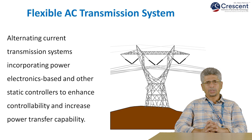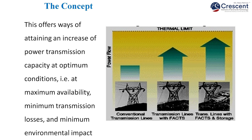Flexible AC Transmission System can be defined as alternating current transmission systems incorporating power electronics-based and other static controllers to enhance controllability and increase power transfer capability. This offers ways of obtaining an increase of power transmission capacity at optimum conditions — that is, at maximum availability, minimum transmission losses, and minimum environmental impact. We have to use the transmission lines at the maximum level possible.